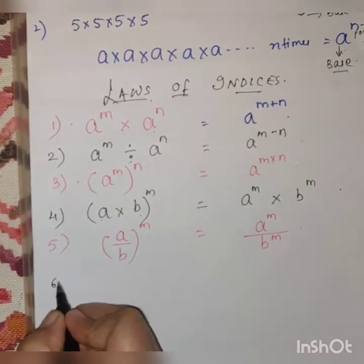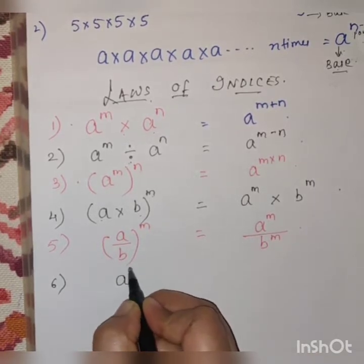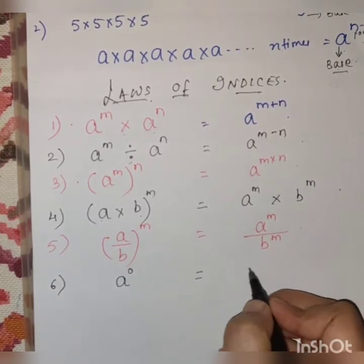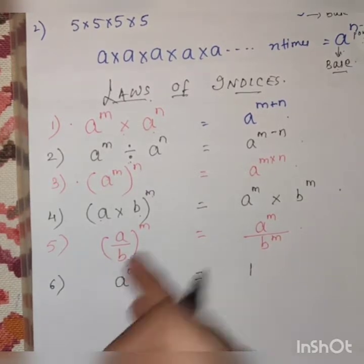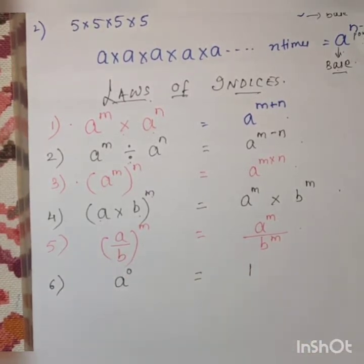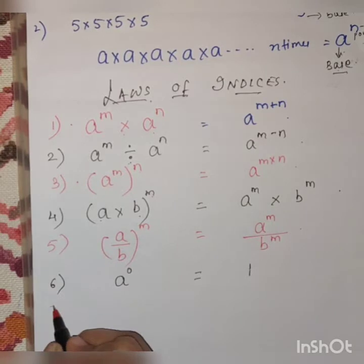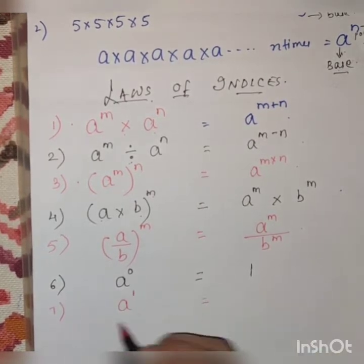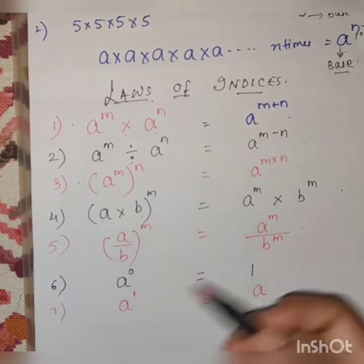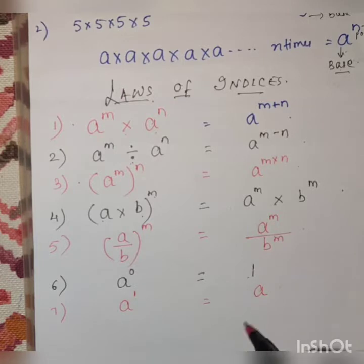Next law: anything raised to 0 is always 1. For example, 100 raised to 0, 99 raised to 0, 1000 raised to 0 - the answer is always 1. Next law: anything raised to 1 is the same number itself. So 99 raised to 1 is 99, and 100 raised to 1 is 100. See the difference - anything raised to 0 is 1, anything raised to 1 is the same number.